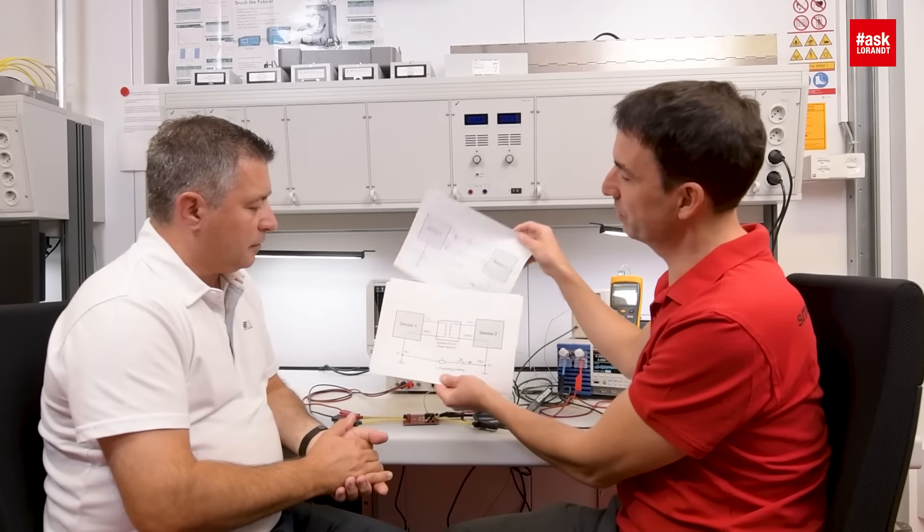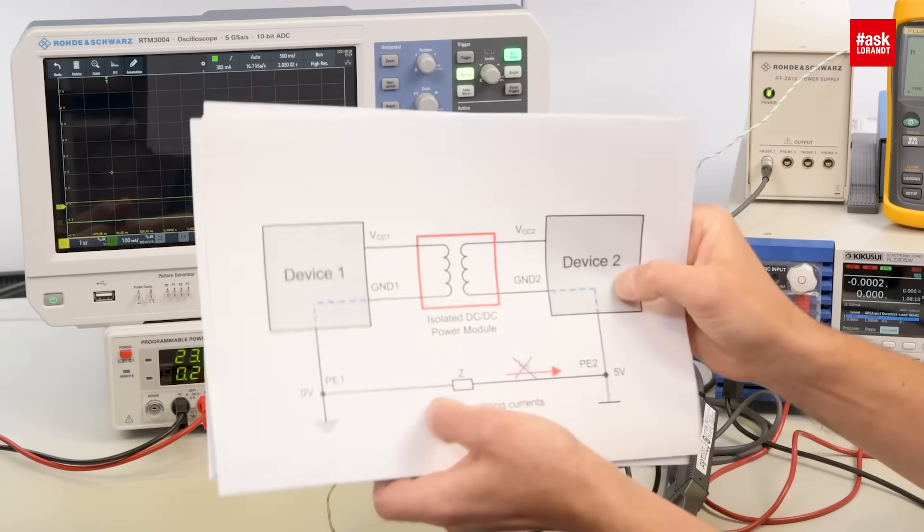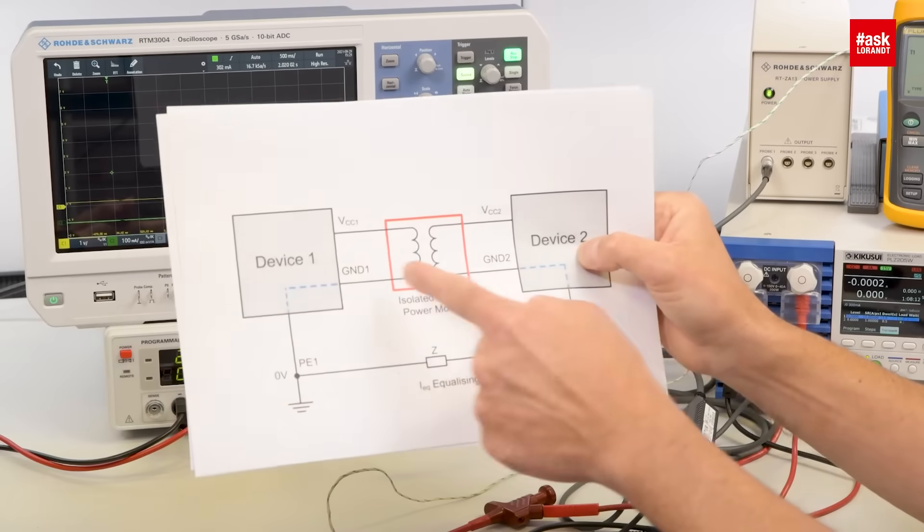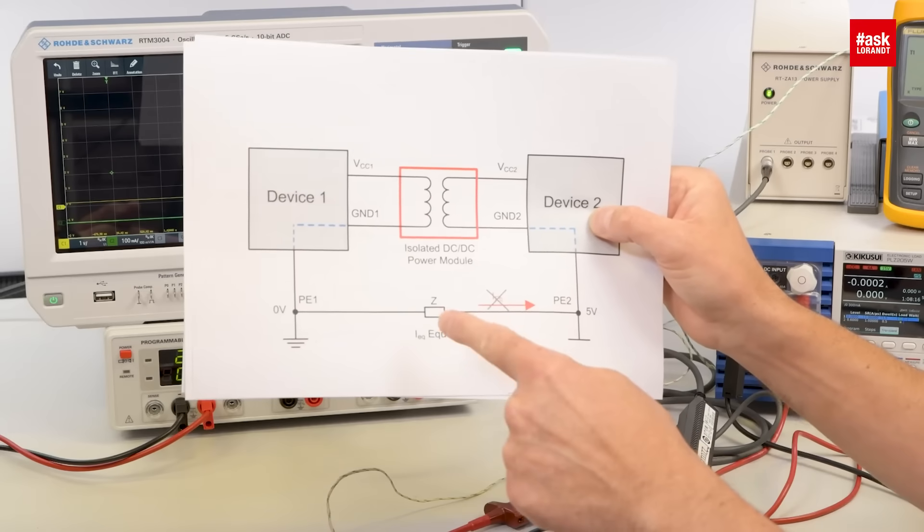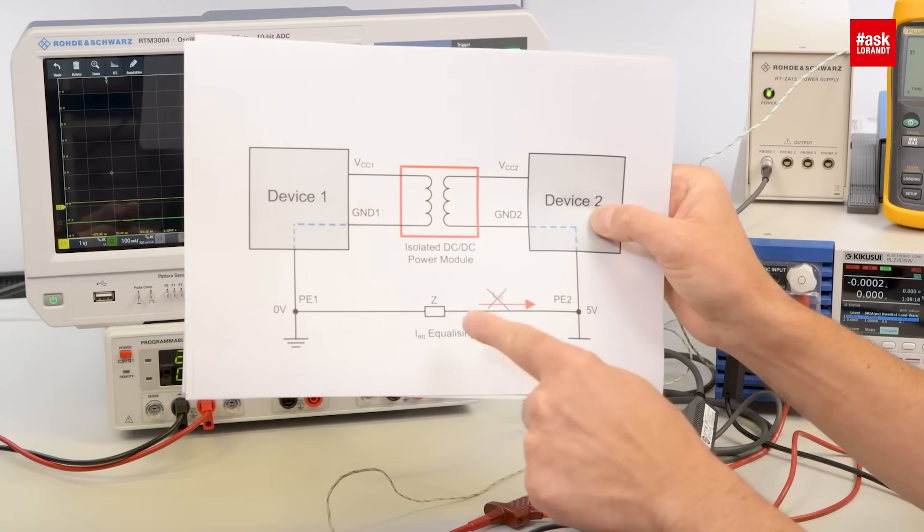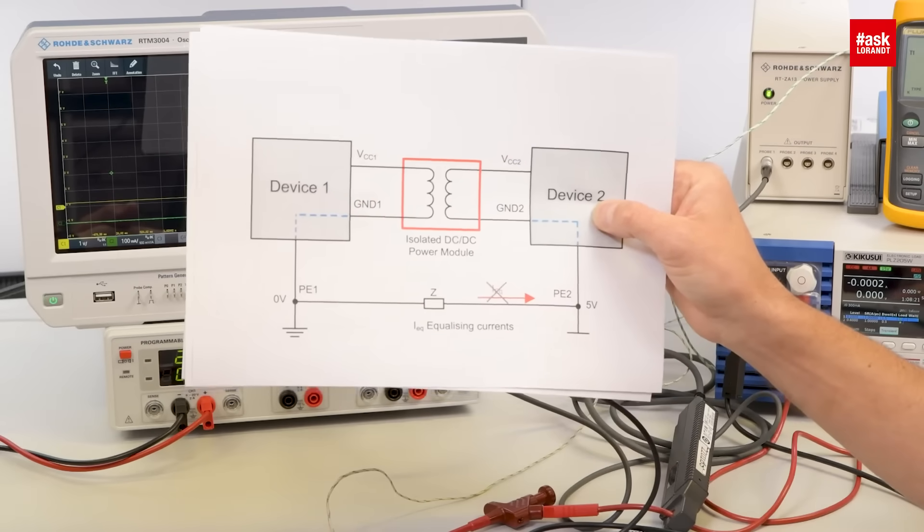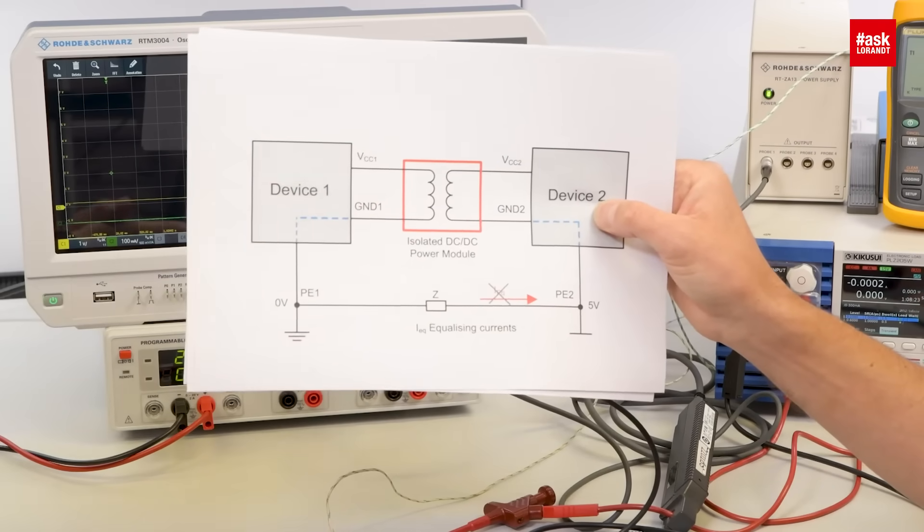And what you can do to get rid of this disturbance, you can take a MAGIC power module here so that you break up the ground loop so that you have got the impedance but it is not possible that an equalizing current can flow. So perfect communication.